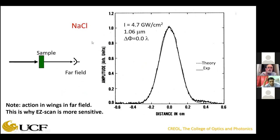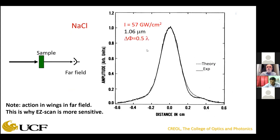Let's look at an example: sodium chloride with picosecond pulses at one micron. We're looking in the far field on a camera at relatively low irradiance — low for this material. Here is a Gaussian beam that we input. The dotted line shows just a little aberration — a very nice Gaussian beam. Now let me turn the irradiance up by over an order of magnitude.